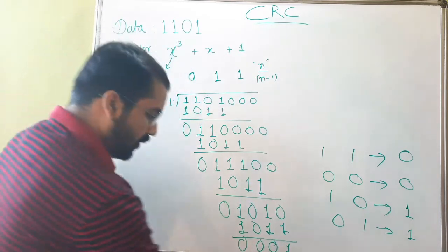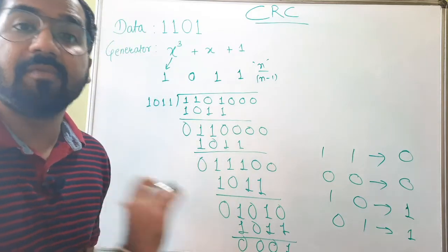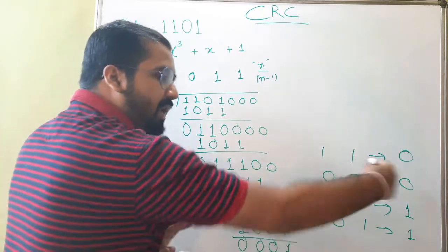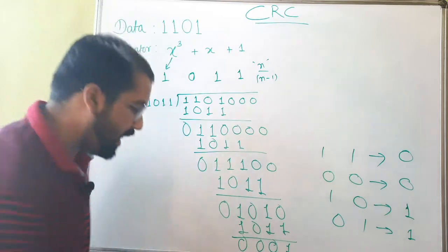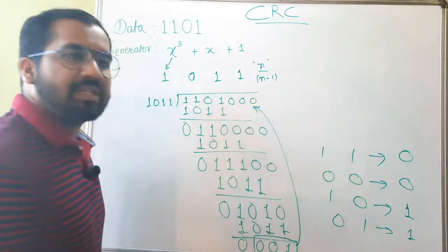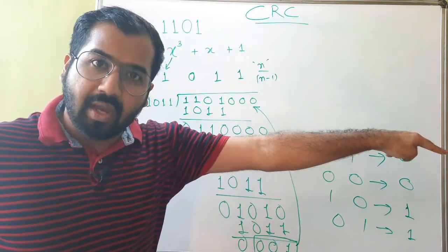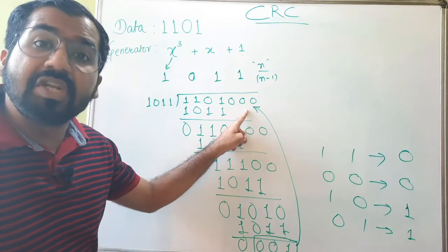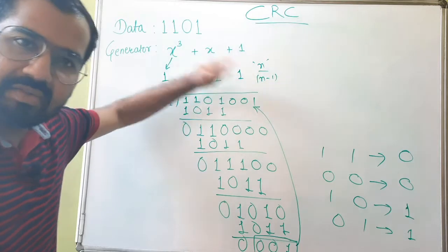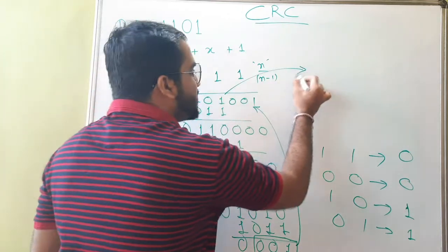Stop the division here. Focus on the last n minus 1 bits of the remainder from the right-hand side — these are 0 0 1. Initially we appended three zeros, but now we know the actual remainder. Replace those three zeros with 0 0 1. This encoded data — 1 1 0 1 0 0 1 — is now ready to be sent from the sender to the receiver in encoded format.